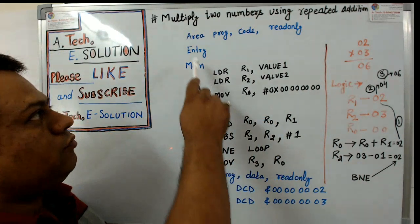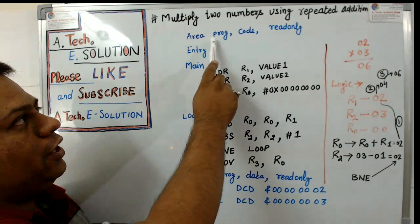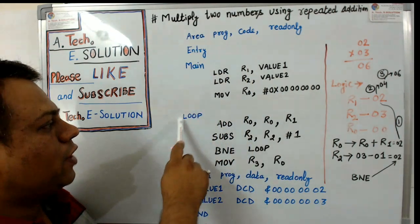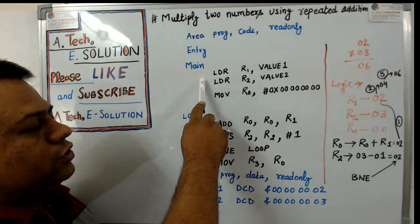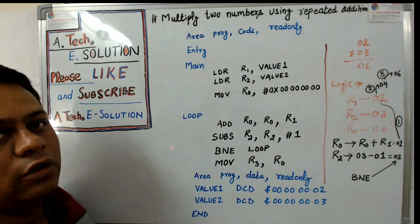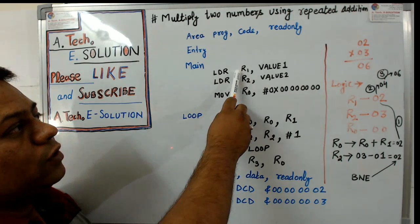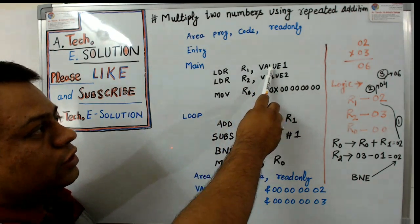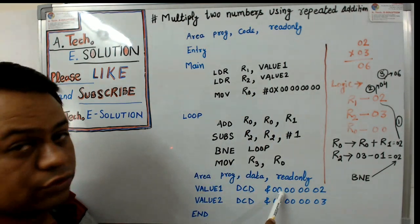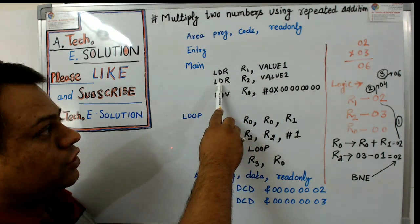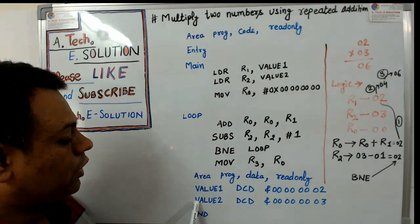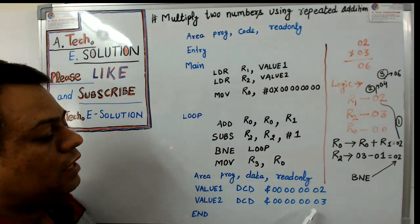First we define our program using AREA, program, code, read-only, ENTRY, and MAIN. In the main section we write our program. The first instruction is LDR — load register — which loads r1 with a value, defined here as 0x02. The second instruction loads r2 with value 2, which is defined here as 0x03.